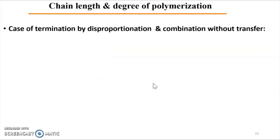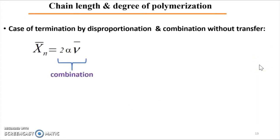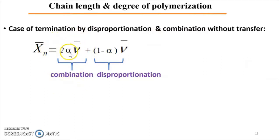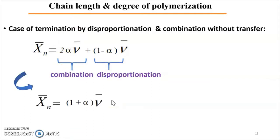Now consider the case with a mixture of termination by disproportionation and combination, without transfer. If a fraction alpha of polymer chains terminates by combination, then the fraction (1 - alpha) terminates by disproportionation. The combination contributes a factor of alpha times 2·nu (since two chains give one dead chain), while disproportionation contributes (1 - alpha)·nu. The overall value of Xn equals (1 + alpha)·nu.